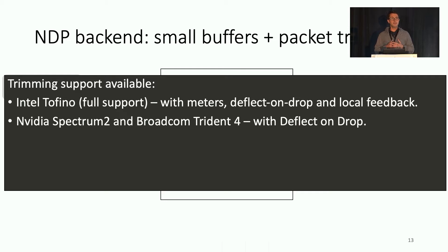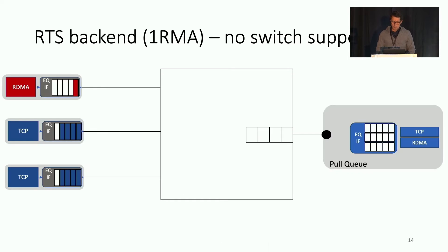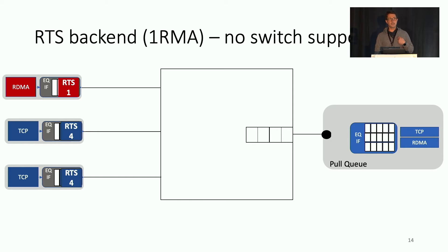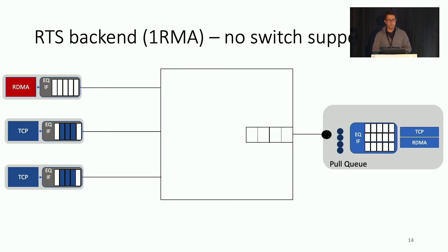There are also implementations available for NVIDIA and Broadcom switches, so you can have trimming in your network today. With trimming, having buffers as low as 12 packets per port is sufficient to give you maximum throughput. If you don't have trimming, we use another backend that uses request-to-send, similar to the one-RMA paper Google proposed. Senders first send RTS packets in the first RTT saying how many packets they want to send — these go to the receiver and bootstrap the pull queue. From that point on it acts exactly like before, but with RTS you waste one RTT when the flow starts and then you're back to receiver-driven mode.